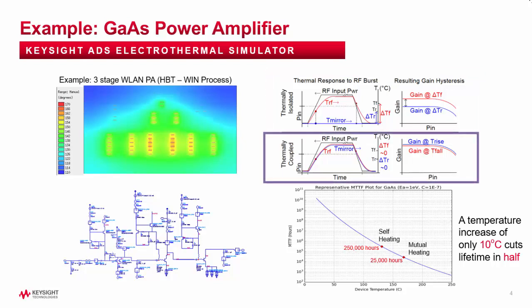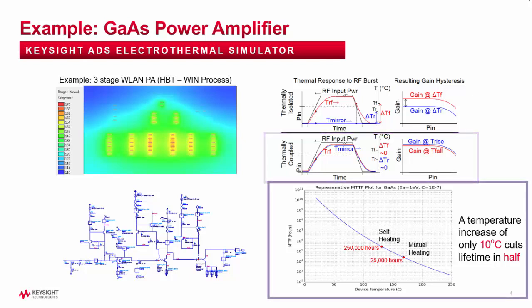Now contrast that with the lower plots, where the bias network and the RF transistors were thermally coupled together in the layout, and note the reduction in gain hysteresis. This slide also includes a plot of mean time to failure, which is a common measure of a device's expected lifetime, and as you can see, it decreases with temperature. A commonly cited rule of thumb is that a device's lifetime is cut in half for every 10 degrees increase in temperature. This illustrates a key benefit of full 3D thermal simulation over simpler self-heating models — since we can capture all the mutual heating in full 3D, we can more accurately predict device temperatures and discover potential issues with respect to reliability or performance.